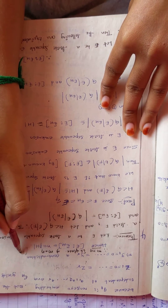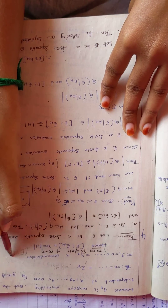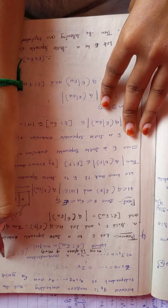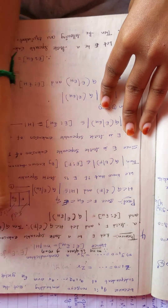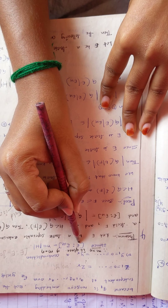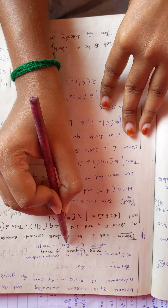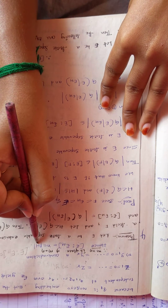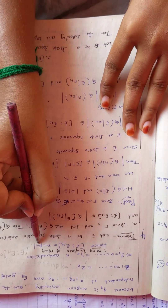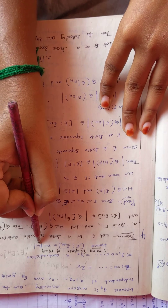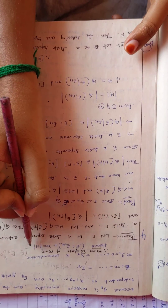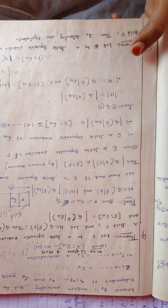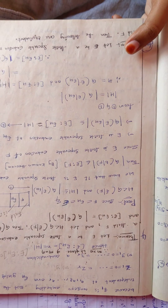Therefore M equals N. We considered that the dimension of E over E^H equals M, and since M equals N and |H| = N, it follows that the dimension of E over E^H equals |H|. Since H is a finite subgroup of the group of automorphisms of E. Hence, we have proved the theorem.